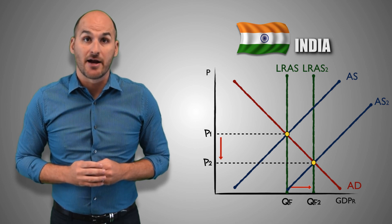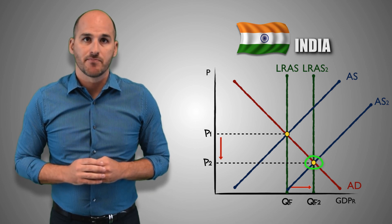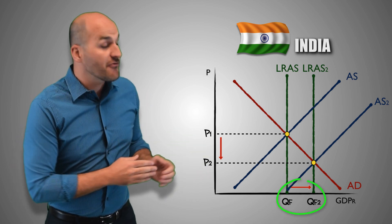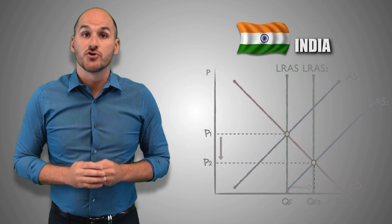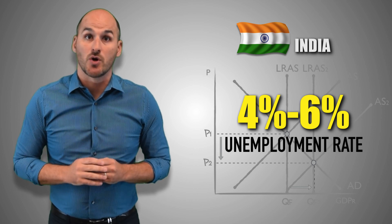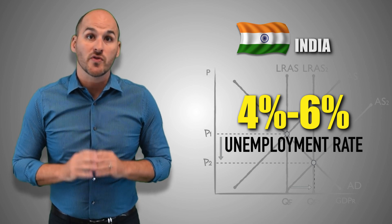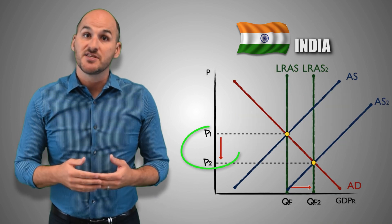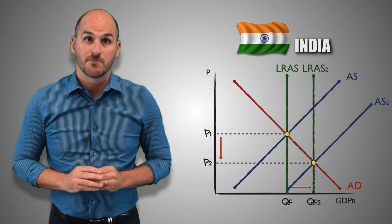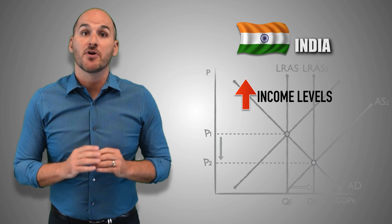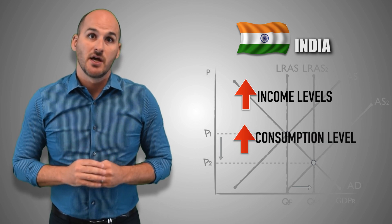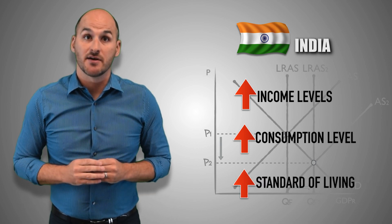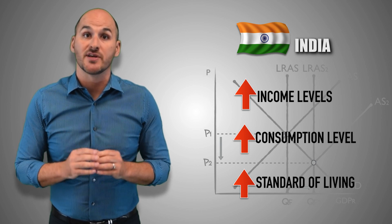With this fundamental change in long-run aggregate supply, the Indian economy has a new long-run equilibrium. With the full employment of its resources, the Indian economy's potential to produce real GDP output increases from QF to QF2. The unemployment rate at QF2 is still 4–6%, but the workers who are currently employed can produce a greater quantity than before because they are more productive. Prices decrease in the long run, the national income level rises, consumption levels increase, and the standard of living increases in India as real GDP per capita grows.